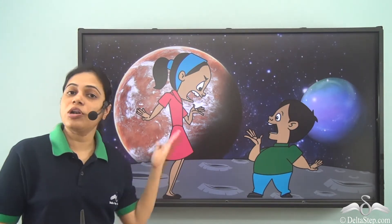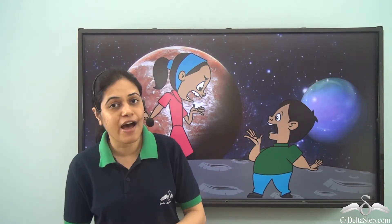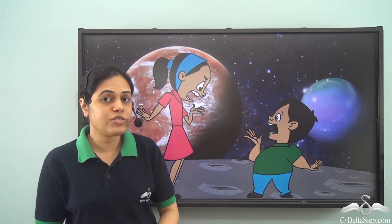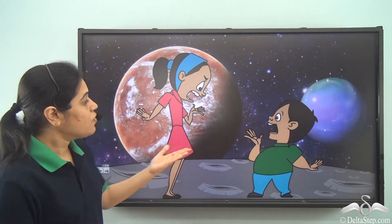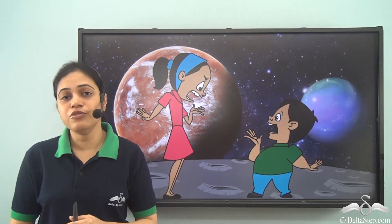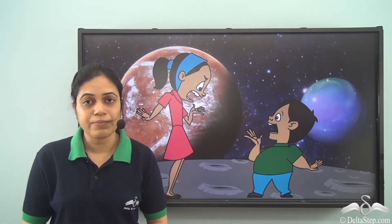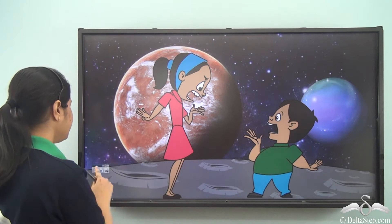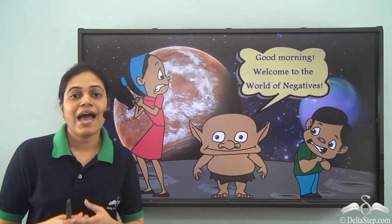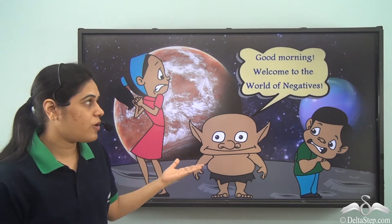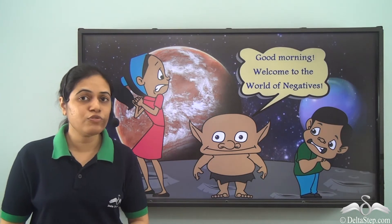Riya had become tall and thin and Rohan had become short and fat — exactly opposite to how they were. Now they were really confused about where exactly they were and what had happened to them. That is when a very funny looking goblin came up and said, 'Good morning, welcome to the world of negatives!' and they were even more confused.